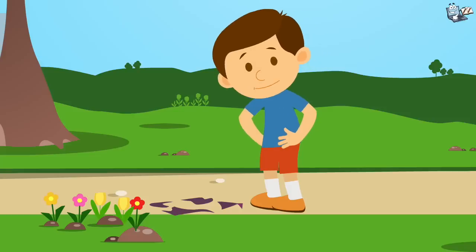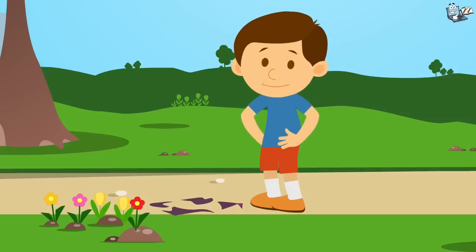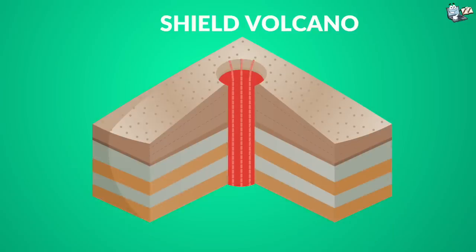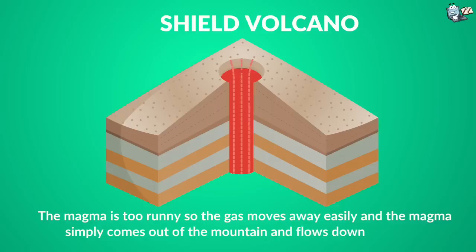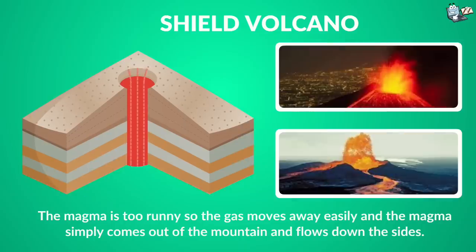Volcanoes can also be classified based on their shapes. Shield volcanoes. These are shaped like a shield or a bowl in the middle, with long gentle slopes made by the lava flows. In this type, the magma is too runny, so the gas moves away easily, and the magma simply comes out of the mountain and flows down the sides. No explosion, though. Some shield volcanoes are in Mount Etna and Hawaii.